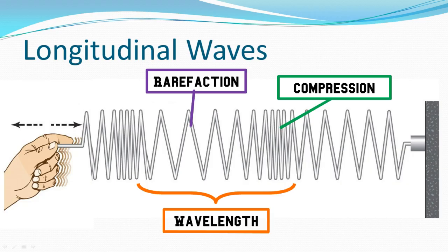When we look at a longitudinal wave, we can see compressions — areas where the spring is closer together — and rarefactions, areas where the spring is further apart. The distance from the beginning of one rarefaction to the beginning of the next, or from one compression to the next, is one wavelength. In this example, I know I have a longitudinal wave because I can see the compressions and rarefactions, and the wave and the hand are both moving horizontally — in the same direction.